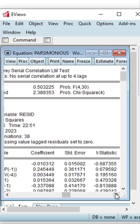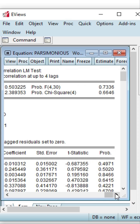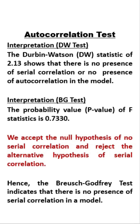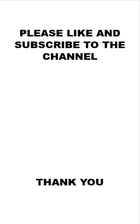Now, what does this mean? The Durbin-Watson statistic of 2.135 shows that there is no presence of serial correlation or autocorrelation in the model. For the Breusch-Godfrey test, the probability value of the F-test, which is 0.7330, implies that we accept the null hypothesis of no serial correlation and reject the alternative hypothesis of serial correlation. Hence, the Breusch-Godfrey test indicates that there is no presence of serial correlation in the model.